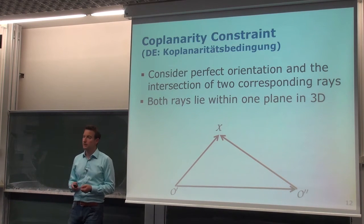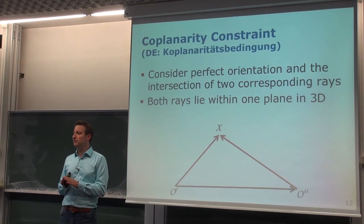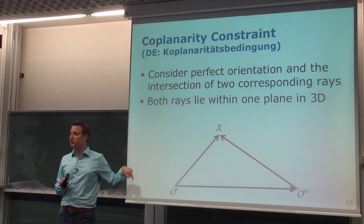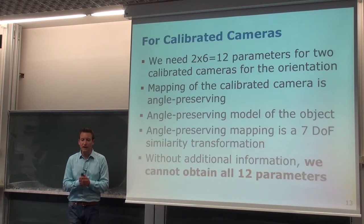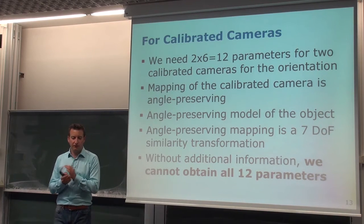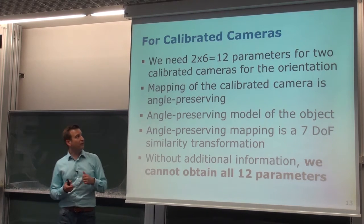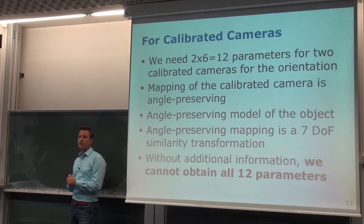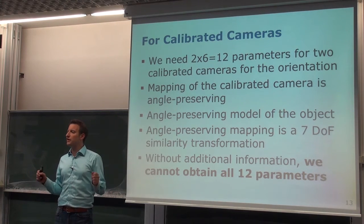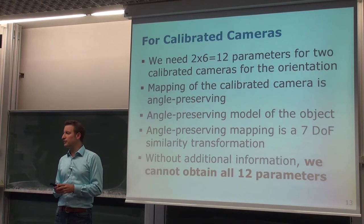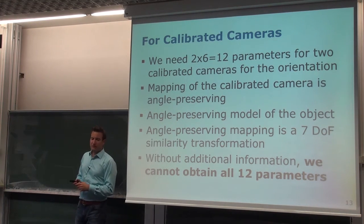This coplanarity constraint is what we'll use for the remainder of today's course. Now let's look at the calibrated camera case. We said we have 12 parameters for two calibrated cameras — the locations of the projection centers and the orientations of the two cameras. With a calibrated camera, we have an angle-preserving mapping, meaning the scene can only be known up to a similarity transform. So we cannot estimate all 12 parameters from knowing correspondences alone.